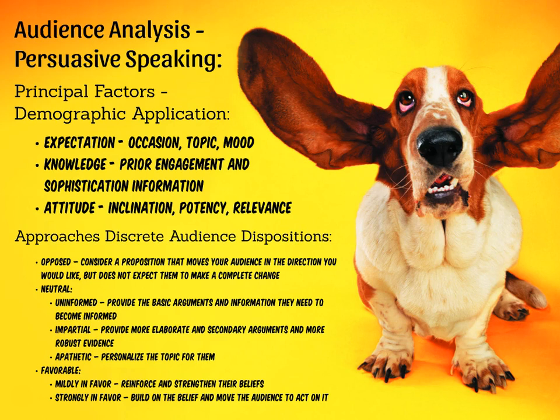Neutral audiences, of which your audiences are likely to become the most numerous, would be branched into three different categories: the uninformed, the impartial, and the apathetic. Uninformed audiences typically don't have the sophistication of information to become well-informed enough to make a decision either opposed or in favor of your proposition. So in this instance, you're going to give them the basic or plenary arguments they need to become informed.